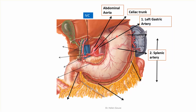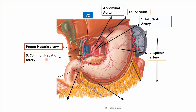Why is the splenic artery tortuous? Because when the stomach expands, we do not want it to compress the splenic artery. It carries large quantities of blood towards the spleen for immune activity. The third branch from the celiac trunk is the common hepatic artery, which gives the proper hepatic going to the liver and giving the right and left hepatic and the cystic artery.